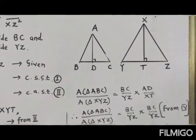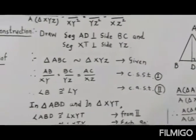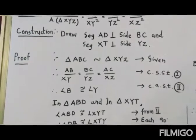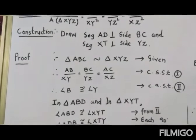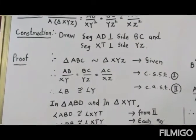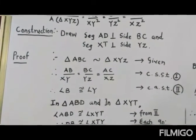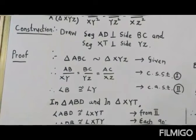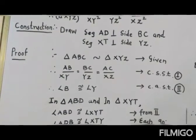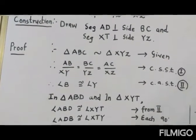AD is perpendicular to BC and XT is perpendicular to YZ — that will be part of the construction. In the construction we write: draw segment AD perpendicular to BC and segment XT perpendicular to side YZ.